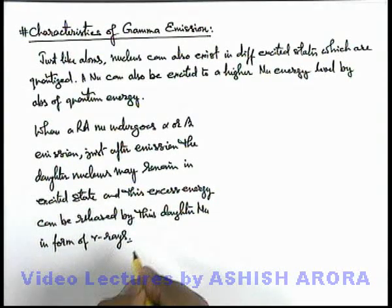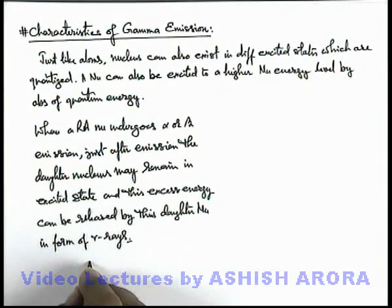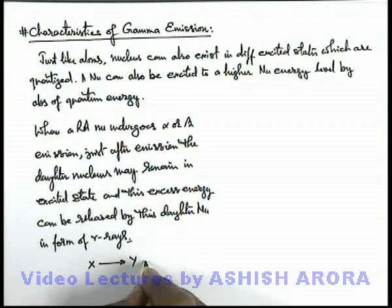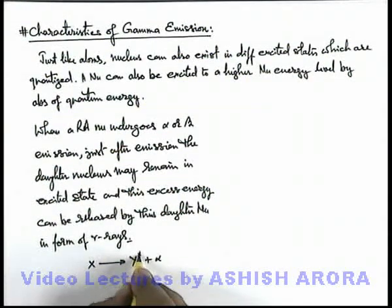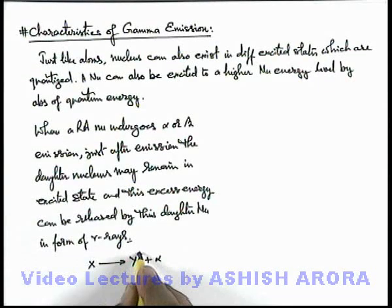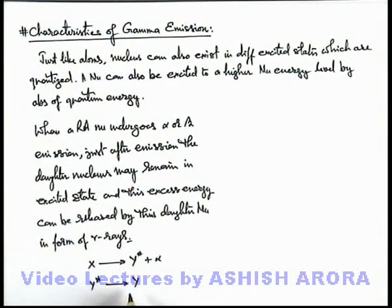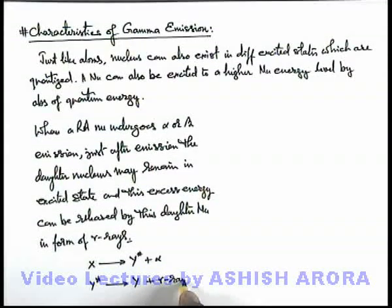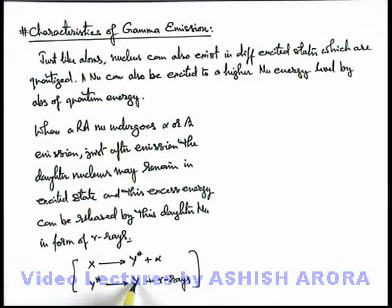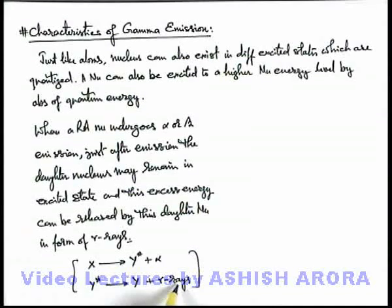The reaction could be like this: if a nucleus X decays to Y and releases an alpha particle, it may be possible that Y will absorb some extra energy and become excited, so we write it as Y*. This Y* later draws back to the ground state of its nucleus and releases gamma rays. So this is the complete reaction in which X decays to Y with alpha particles as well as gamma rays emitted after some time.